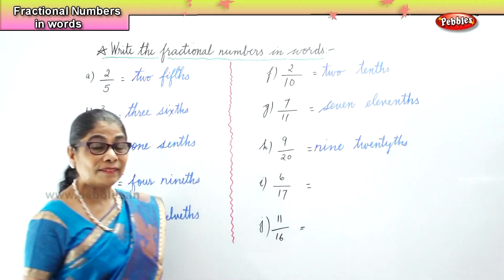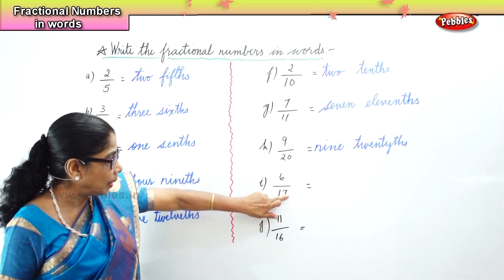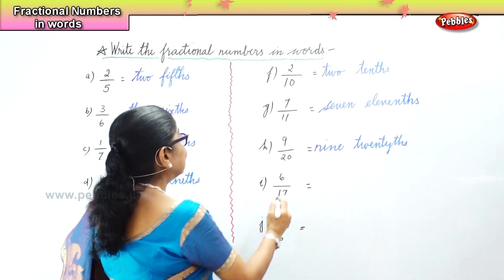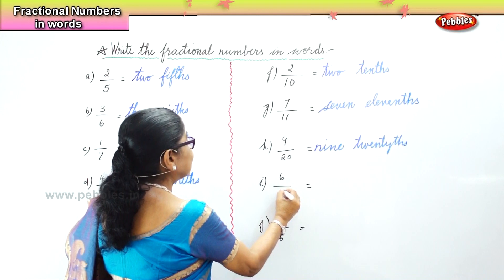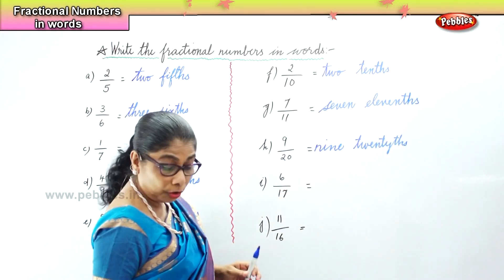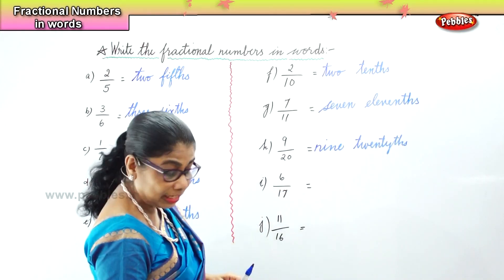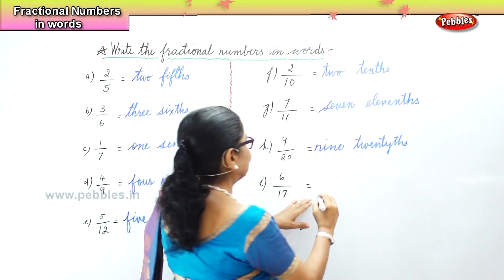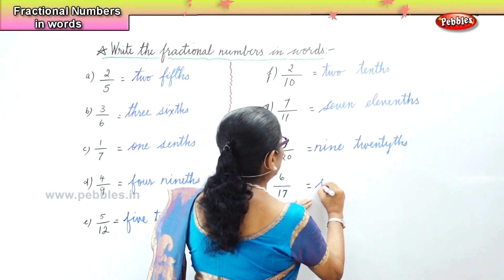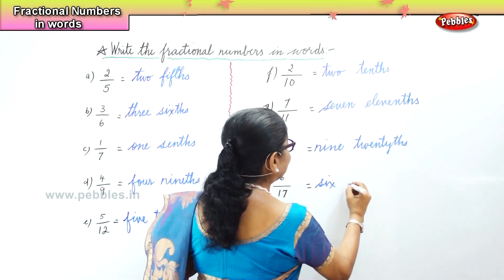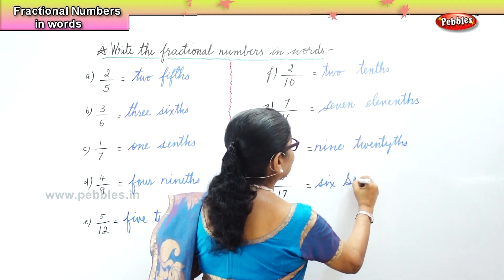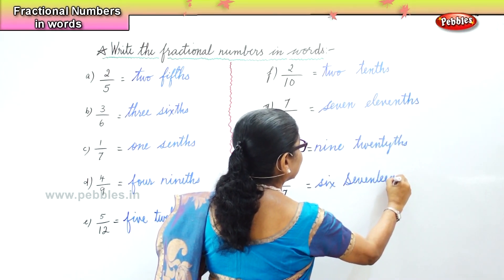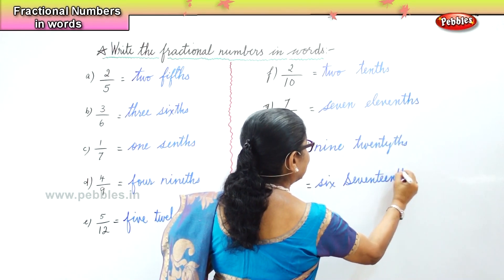Next we have 6 parts out of 17 parts. How will we write that? Six seventeenths — six parts out of seventeen parts. Six seventeenths.